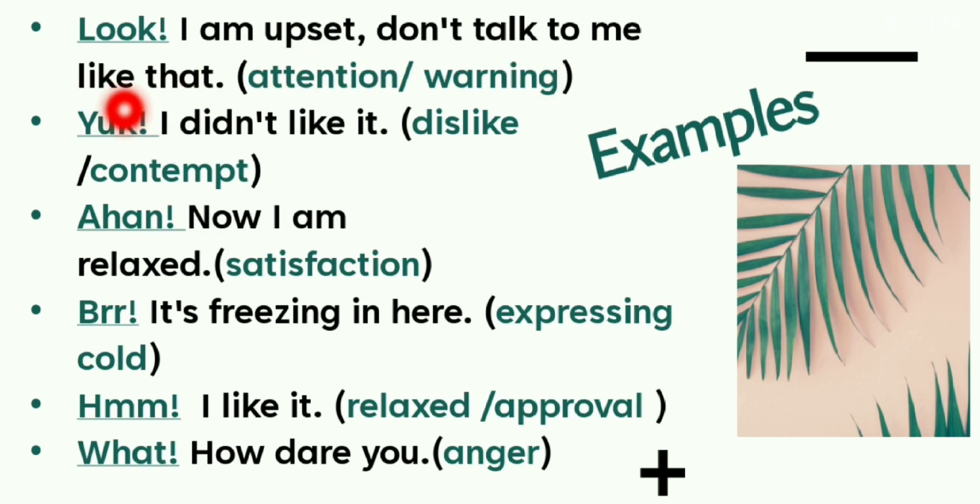Next example: Yuck! I didn't like it. So yuck is showing over here dislike or contempt of something. Next example: Aha! Now I am relaxed. Over here, aha interjection is showing satisfaction. Next example: Brr! It's freezing in here. This brr in this sentence is expressing cold.